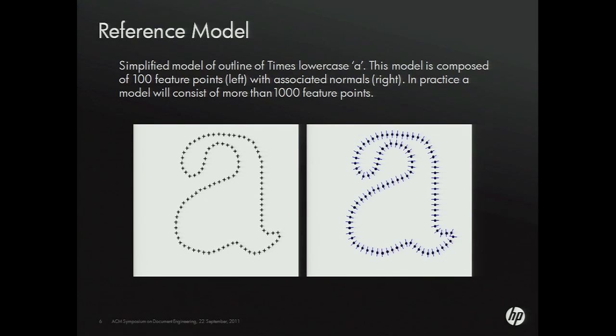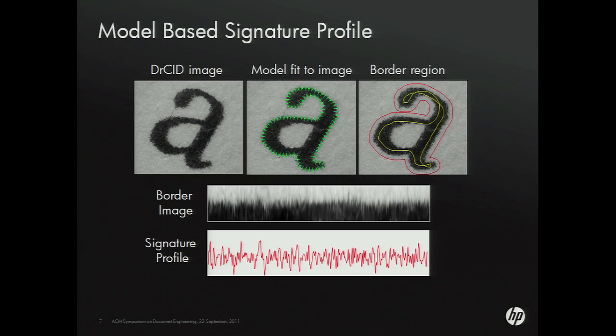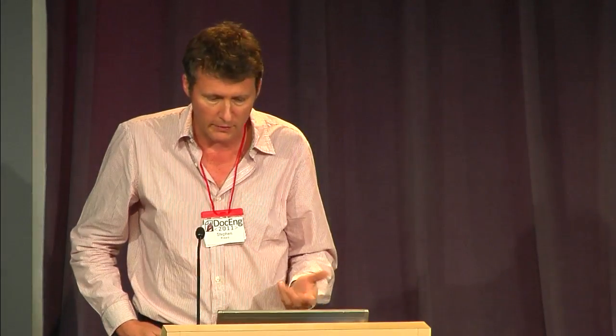The reference model consists of a set of points representing the outline of the thing you're going to print. So anything can be used as a forensic mark — in this case we're using a letter A and its outline to provide a model for robust identification. The model will actually consist of several thousand points — 2,000 points in the examples shown here. For every point we also pre-compute its normal, so that once we've located the model we know the normal direction. This model-based approach gives us very high confidence and very well-located registration of our outline on the actual image.